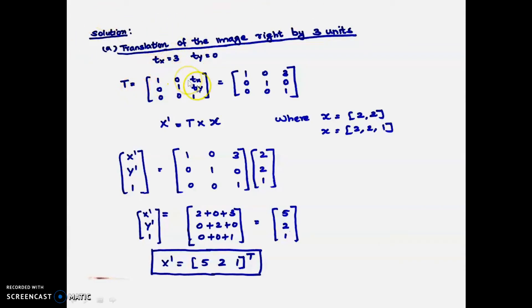The transformation matrix is [1 0 tx; 0 1 ty; 0 0 1]. Substitute tx and ty, so we get [1 0 3; 0 1 0; 0 0 1]. The image point is given as (2, 2). We convert the 2-vector into a 3-vector: [2, 2, 1].